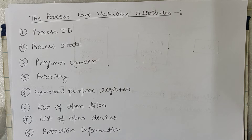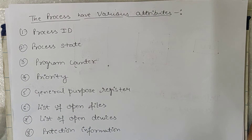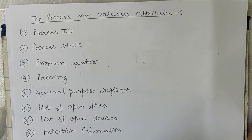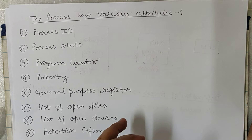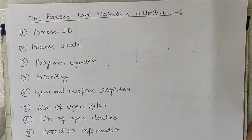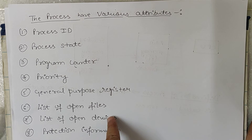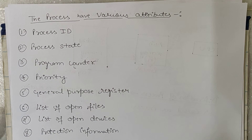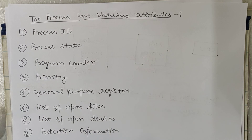Priority means the operating system sometimes assigns a priority to each process. A high-priority process gets picked up by the CPU first — this will be discussed further in CPU scheduling algorithms. General-purpose registers refer to what kind of registers a particular process holds. List of open files means the files the process is currently using. List of open devices means what devices the process is using — for example, a printer. Protection information contains any protection mechanism details maintained for that process. These are some of the various attributes of a process.